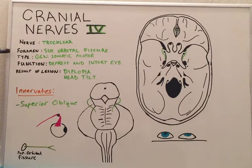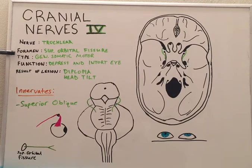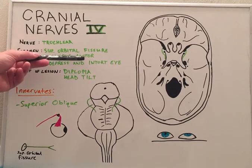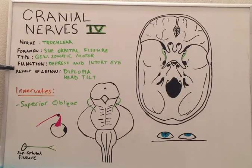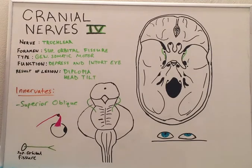The trochlear nerve is a general somatic motor type of nerve and its function is to depress and intort the eye. Lesions of the trochlear nerve result in diplopia and a head tilt.